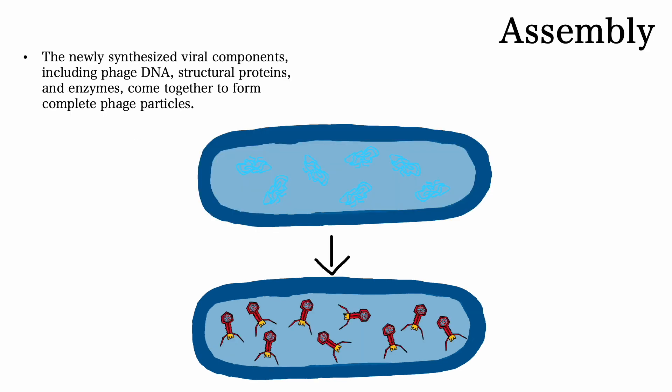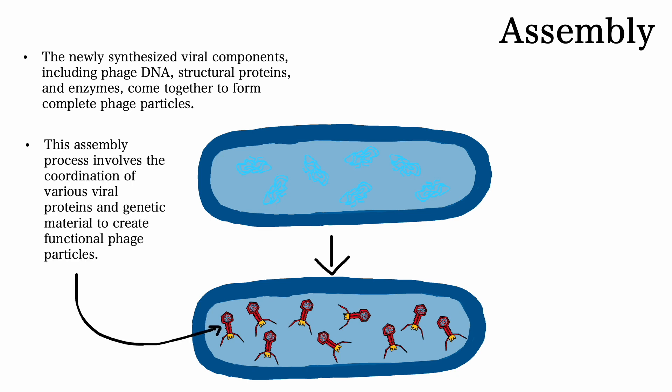During the assembly phase, the newly synthesized viral components, including phage DNA, structural proteins, and enzymes, come together to form complete phage particles. This assembly process involves the coordination of various viral proteins and genetic material to create functional phage particles.